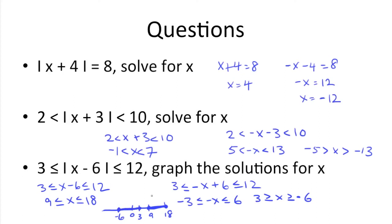Now just to double check those answers: let's pick 10 — 10 minus 6 is 4, and 4 is between 3 and 12, so that works. And over here let's take negative 6: negative 6 minus 6 is negative 12, the absolute value signs get rid of the negative, so 12 is greater than or equal to 3, and it is equal to 12. So that works.